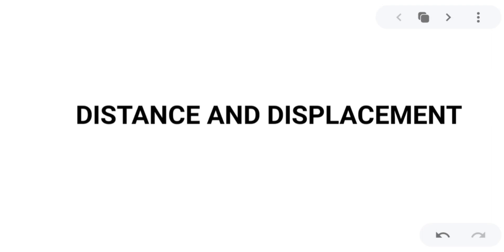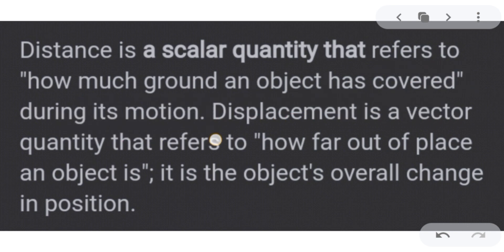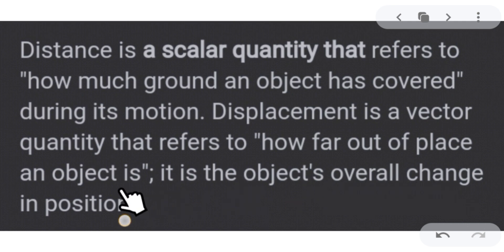Hello everyone, this is Mam Amano and this lecture video is all about distance and displacement. We will be focusing here on the sample problems. First, let us define the two. Distance is a scalar quantity that refers to how much ground an object has covered during its motion — the actual length covered by the object while it is moving. Displacement is a vector quantity that refers to how far out of place an object is; it is the object's overall change in position.